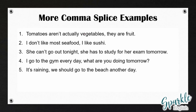In the first one, 'tomatoes aren't actually vegetables, they are fruit,' I'm going to add a semicolon since these sentences are closely related. In the next one, 'I don't like most seafood, I like sushi,' I'm going to add the conjunction 'but': 'I don't like most seafood, but I like sushi.' Remember, we are keeping the comma. When we connect two independent clauses with a conjunction, the comma comes before the conjunction.